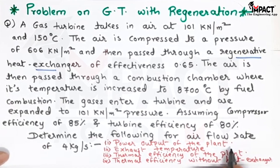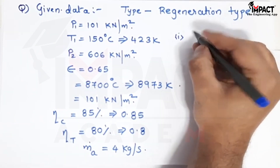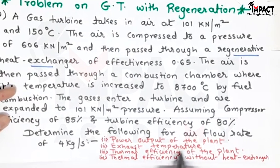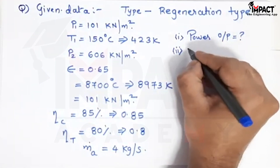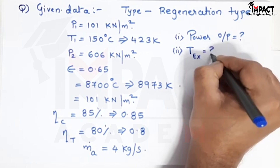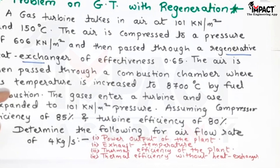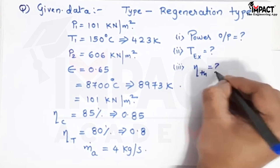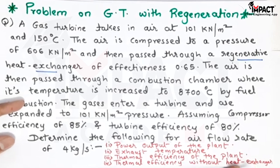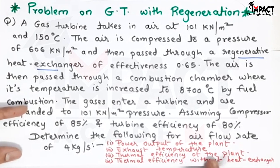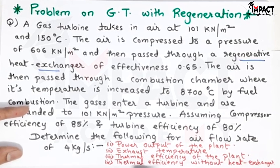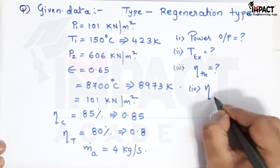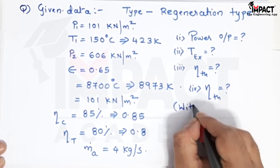We have to find: first, the power output of the plant (W net); second, the exhaust temperature; third, the thermal efficiency of the plant with regeneration; and fourth, the thermal efficiency without the heat exchanger, meaning without regeneration.